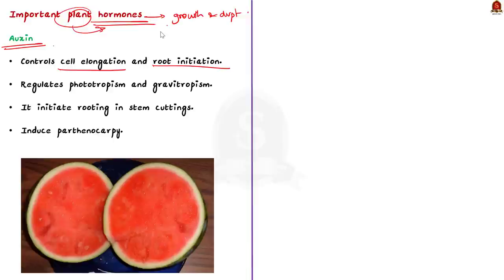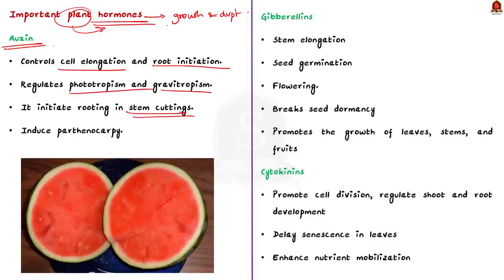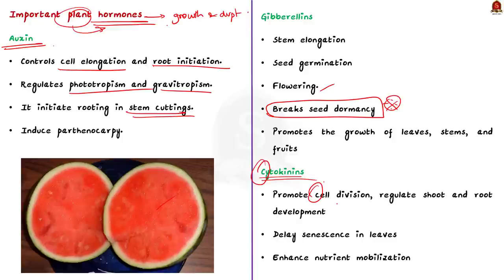Auxins are also important for making new plants from stem cuttings and can even make fruits without seeds. The second hormone is gibberellin. Gibberellins make plant stems longer, help seeds to sprout, and make flowers bloom. They also break seed dormancy and help leaves, stems, and fruits to grow. Next we have cytokinins, which help in cell division and make shoots and roots grow. They stop leaves from getting old and help plants get nutrients. Cytokinins and auxins work together to control plant growth.